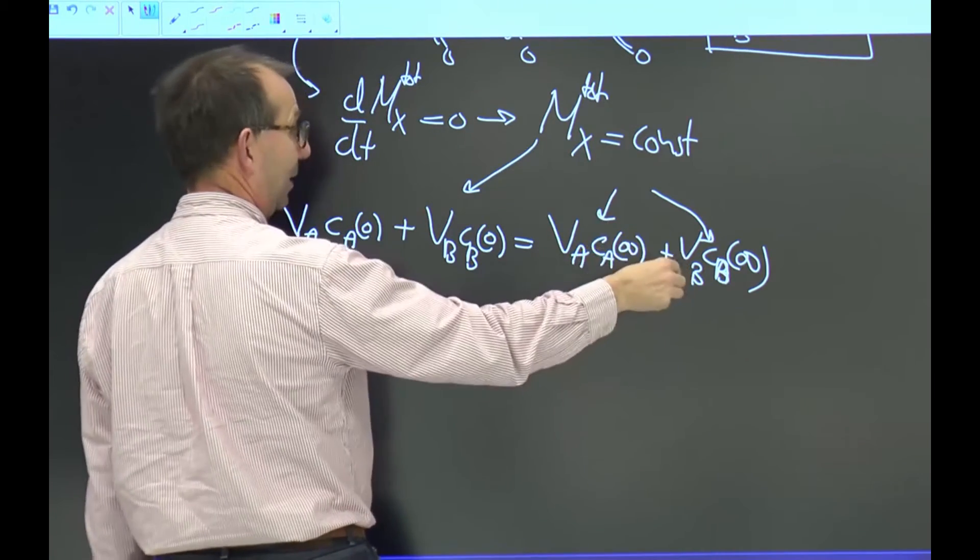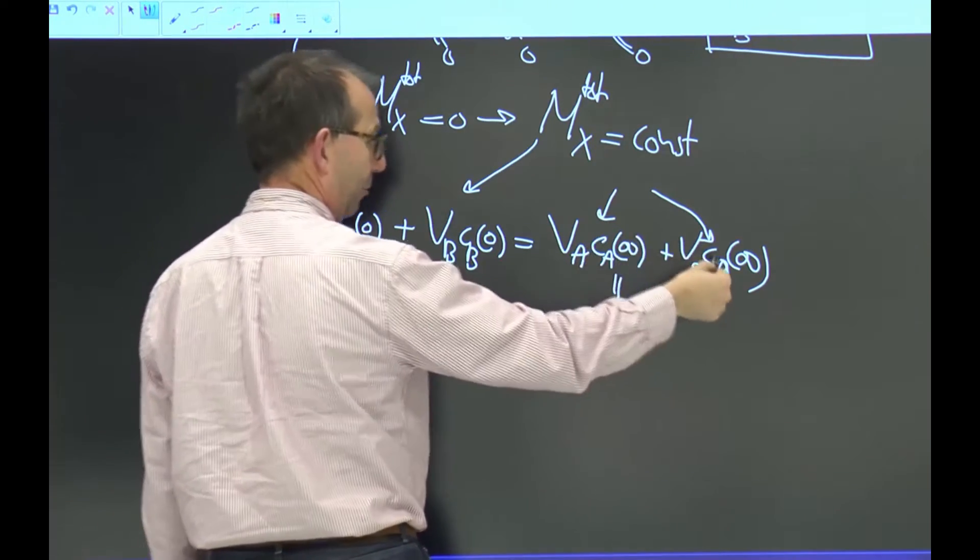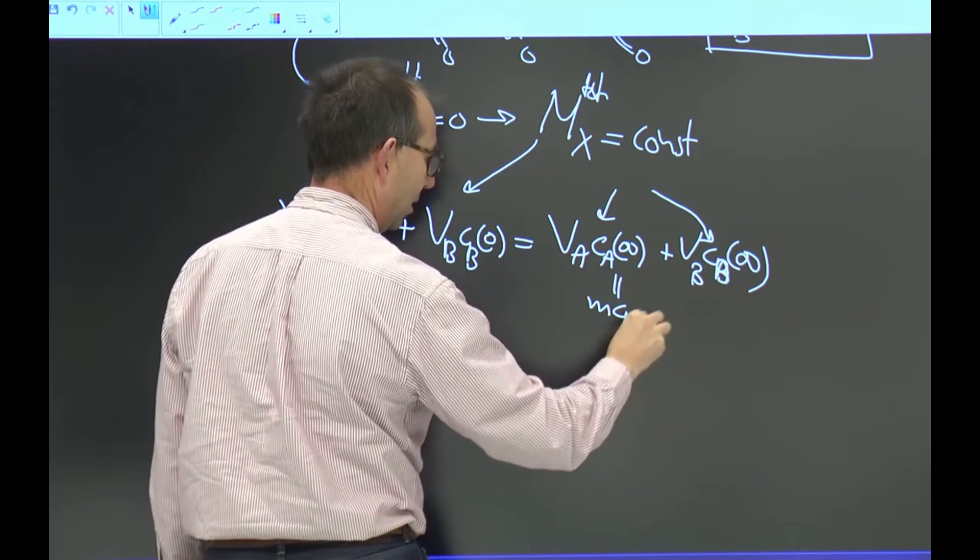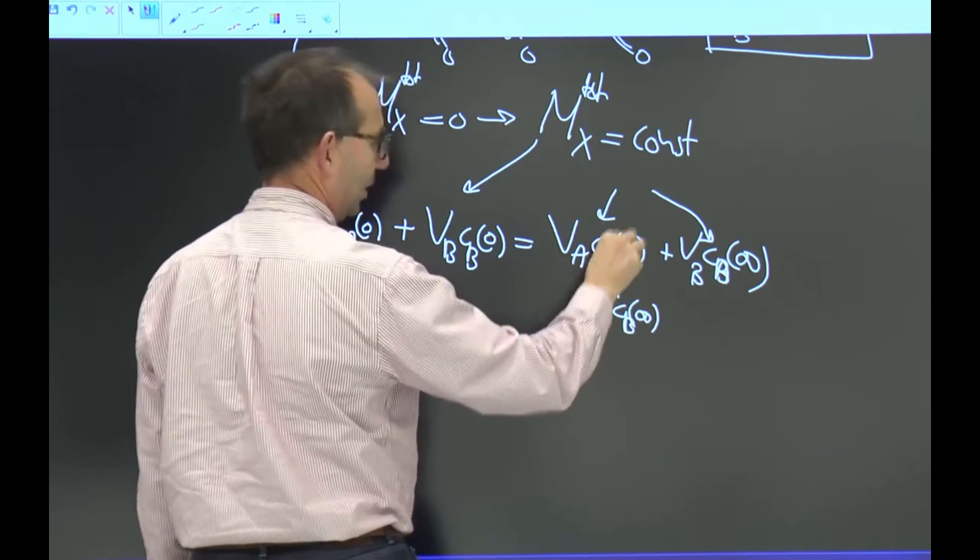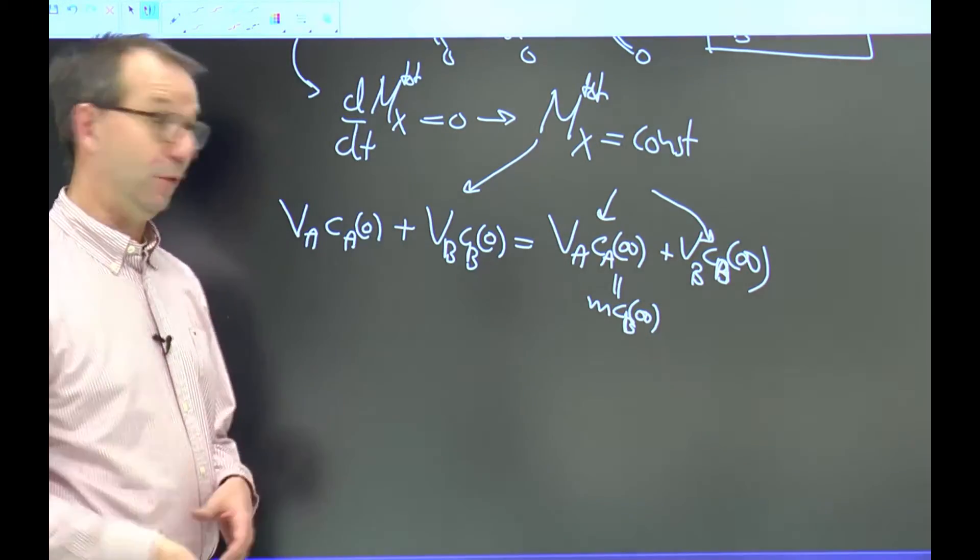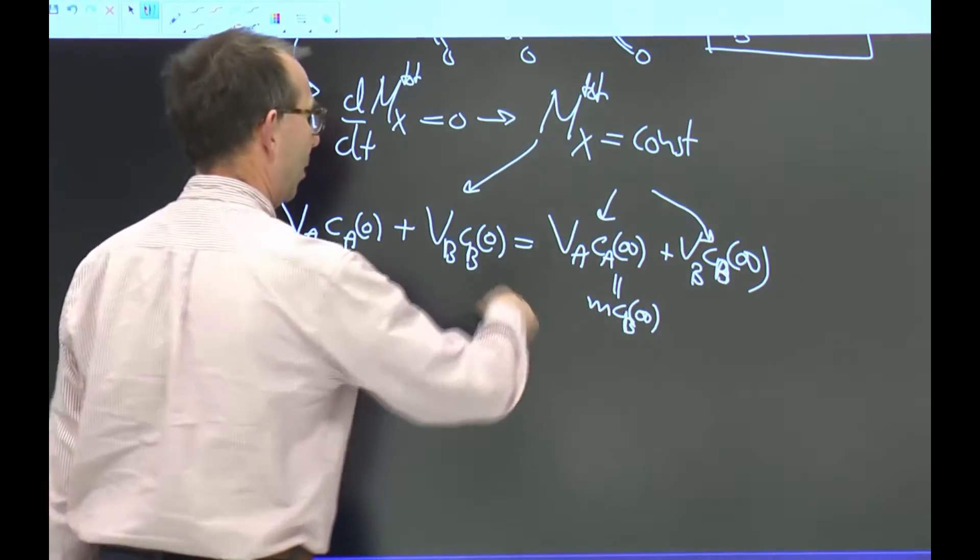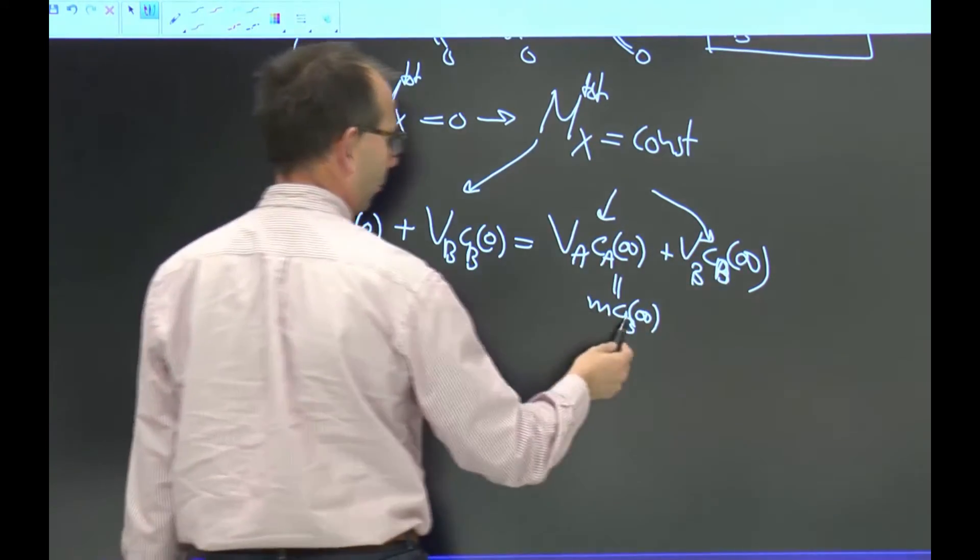But I have an additional equation. This one is at the end, the equilibrium value. So, M times CB infinity must equal CA at infinity, because if I wait long enough, the system will reach equilibrium. Now I have an equation for only one unknown.